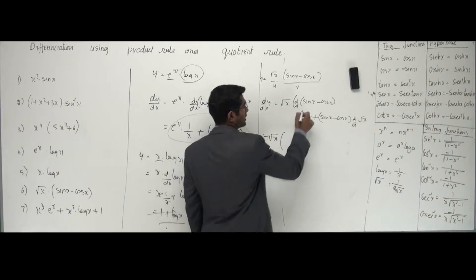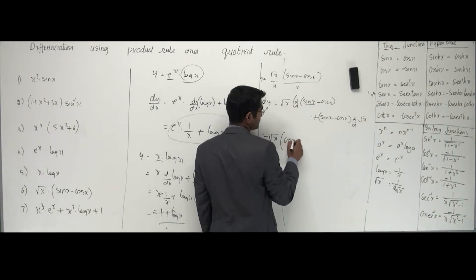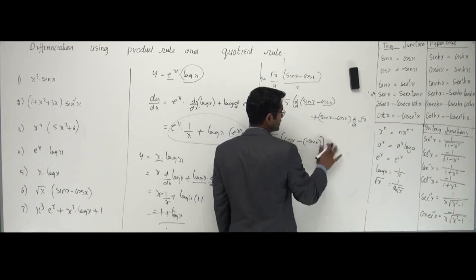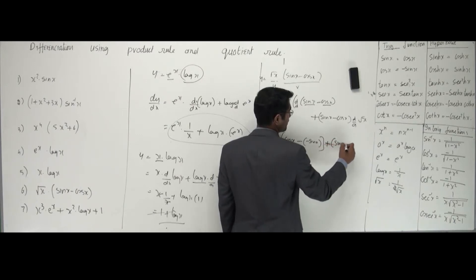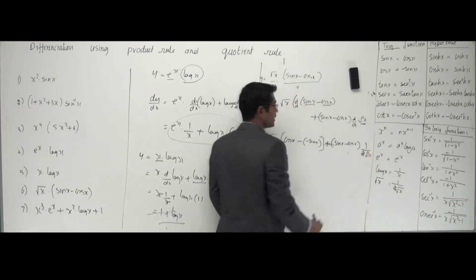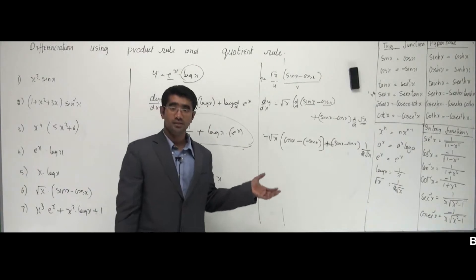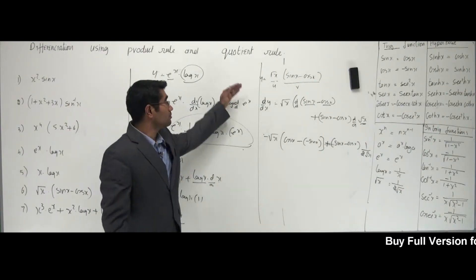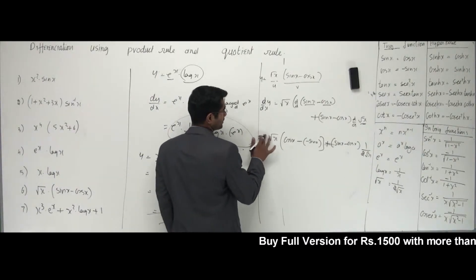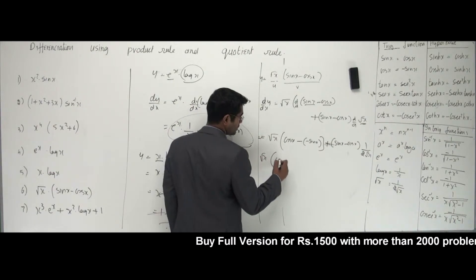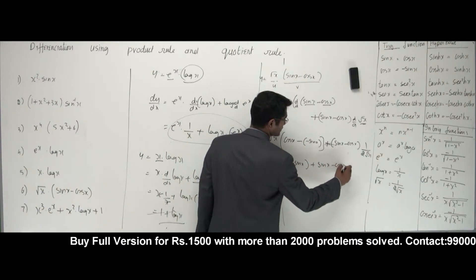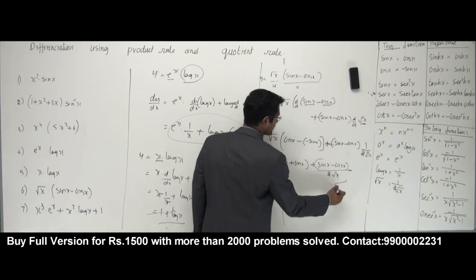So we get: √x · [cos x - (-sin x)] + (sin x - cos x) · [1/(2√x)]. Be careful with the sign: the derivative of cos x is -sin x, so inside the bracket it becomes cos x + sin x. So the final answer is √x · (cos x + sin x) + (sin x - cos x)/(2√x). That's your answer. In all problems we are differentiating only one function at a time — that is the key.